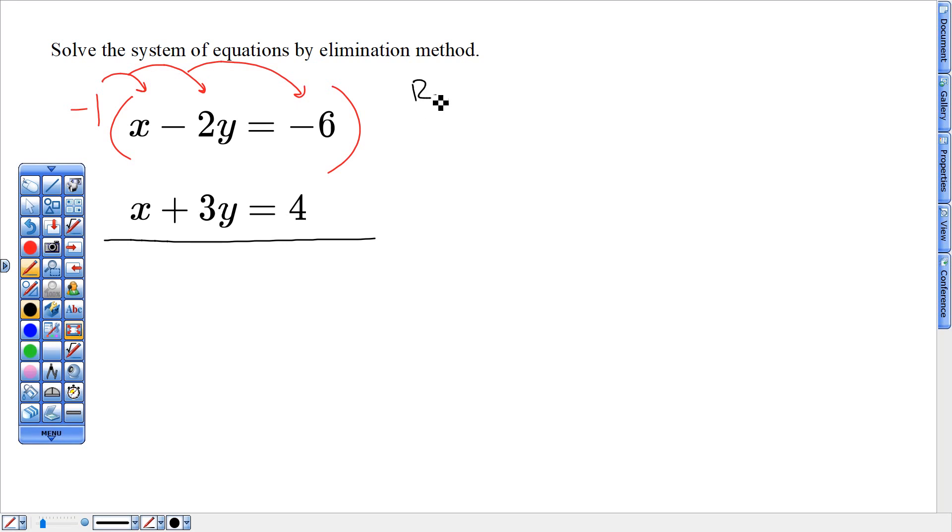So rewrite both. Negative x plus two y equals six and on the bottom plain old x plus three y equals four. And then right there now I'm going to plus them and then negative x's eliminate.